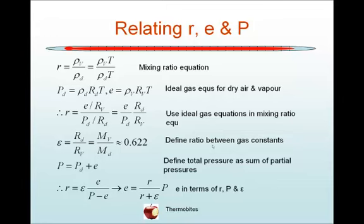We can also write the total pressure as the sum of the partial pressures, that is the pressures due to the dry air and the water vapour: P is equal to Pd plus e. So we can substitute Rd over Rv for epsilon, and we can substitute Pd in the denominator of the equation for P minus e. And so the mixing ratio might be written as epsilon e over P minus e.